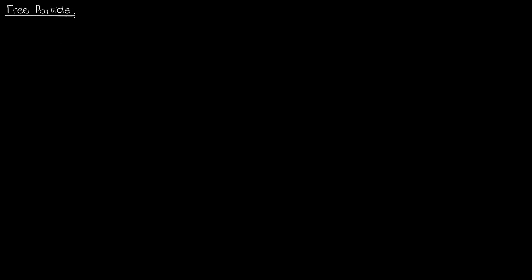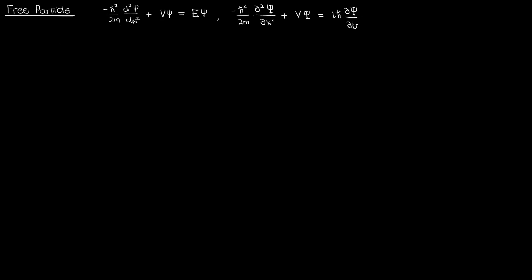Welcome back to another lesson on quantum mechanics. In this video we're going to solve the Schrödinger equation for the free particle. Let's recall the time-independent Schrödinger equation in one dimension, which can be written as follows. On the other hand, you also have the time-dependent Schrödinger equation, which is given by the following, with the time derivative term on the right-hand side.